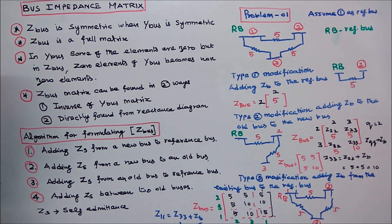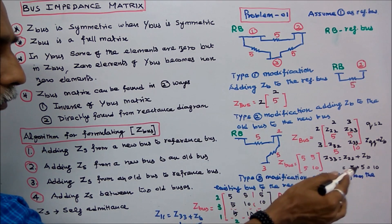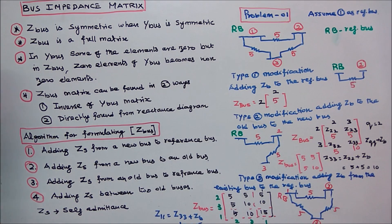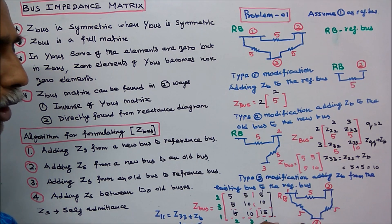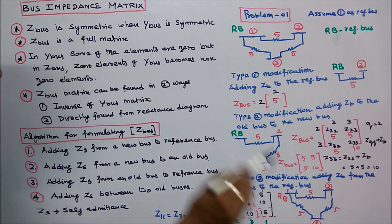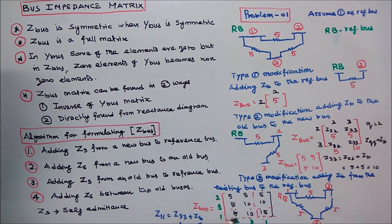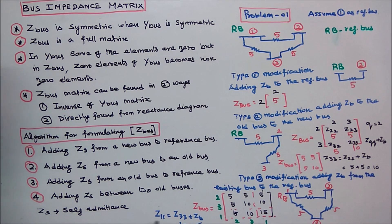Type 3 modification: adding ZB from the existing bus to the reference bus. We are adding from old bus to the reference bus. The current matrix is [5, 5; 5, 10]. The added row and column are [5, 10] and its transpose [5, 10]. Z33 is equal to ZQQ plus ZB, which is 10 plus 5, equal to 15.